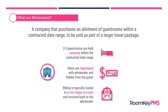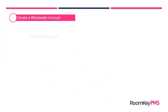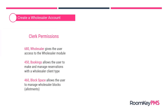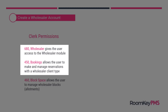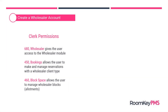Given these qualifications, let's look at how to create a corporate account. Before we start, there are some permissions required to access and manage these different steps. There are three permission sets: Permission 680 gives the user access to the wholesaler module. Permission 450 allows the user to make bookings with a wholesaler account and client type. Permission 460 allows the user to block allotments or wholesaler blocks in the wholesaler module. The first two permissions are typically given to all users, and you may reserve permission 460 only for managers or admin users who are managing contracts with wholesalers.